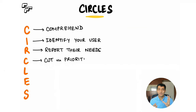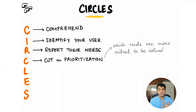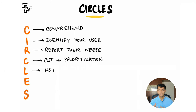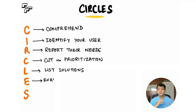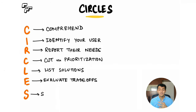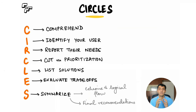Once you have the needs listed, it's time to pick one or two that are most critical to solve for — you may not have the time, money, or resources to address all of them. After prioritizing, you put on your creative thinking hat and brainstorm possible solutions. Then you look at the trade-offs, considering impact and complexity, and come up with one or two final solutions. Lastly, you bring everything together and present it in a logical, cohesive manner with your final recommendations.